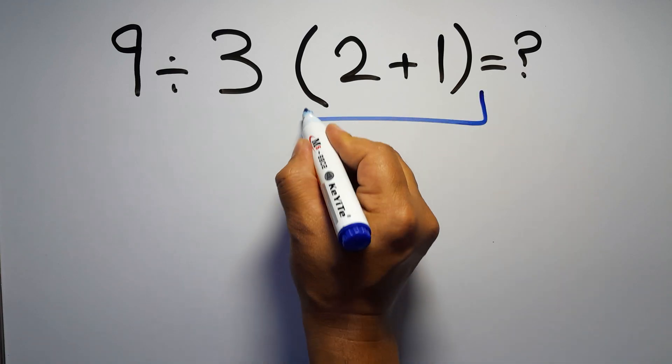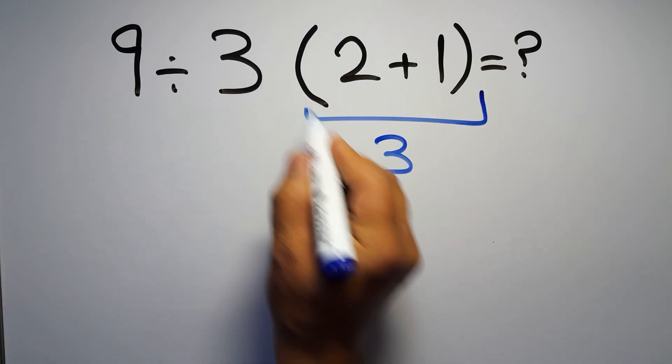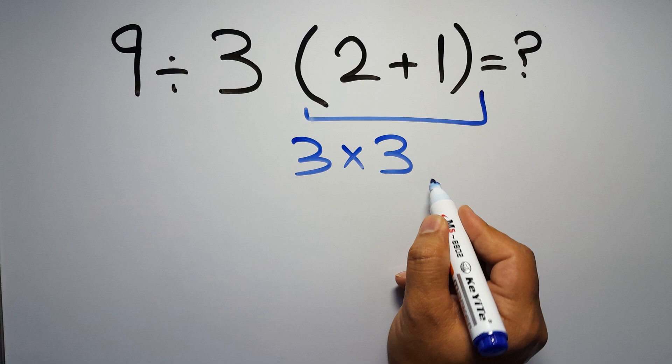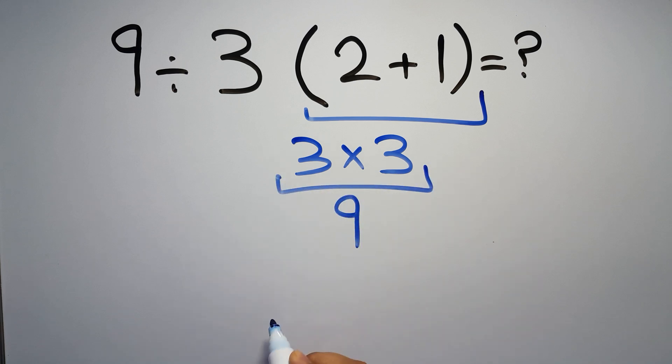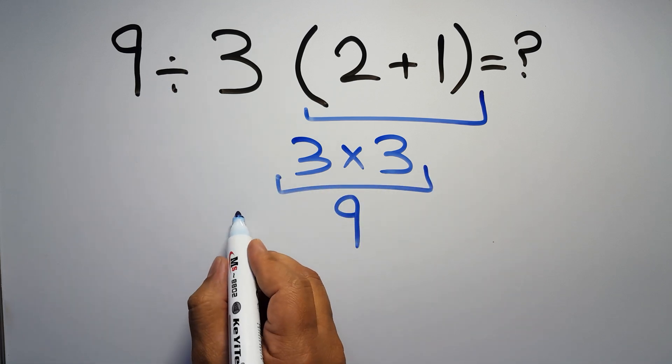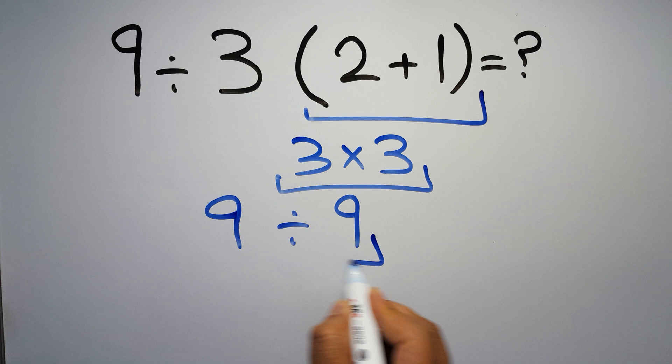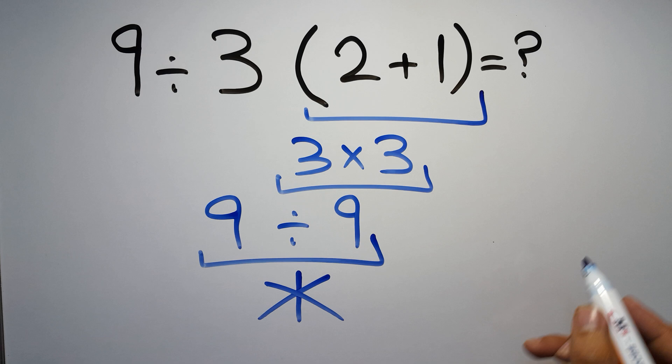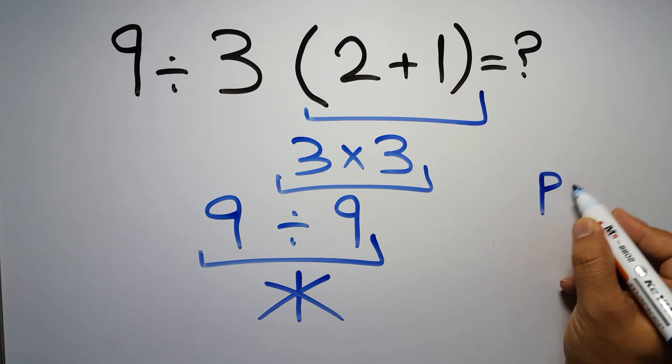2 plus 1 gives us 3 and 3 times 3 is just 9, so 9 divided by 9 equals 1. But this answer is not correct because according to the order of operations, first we have to do parentheses, then